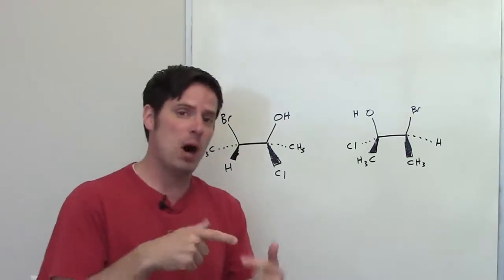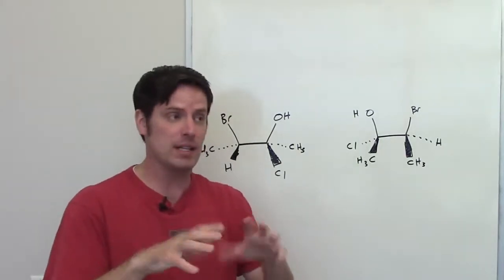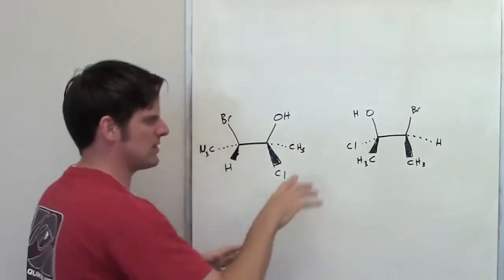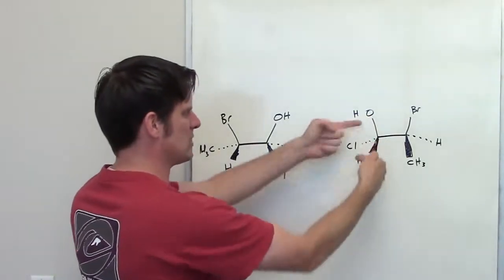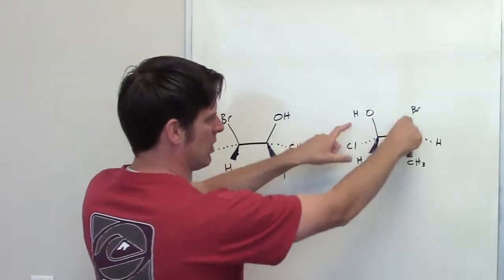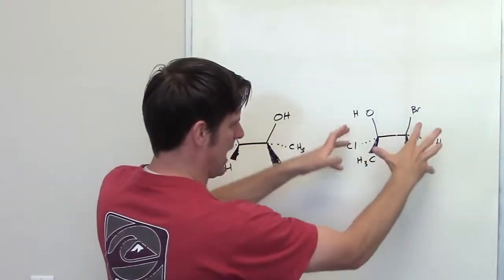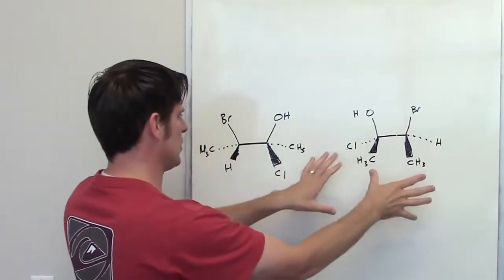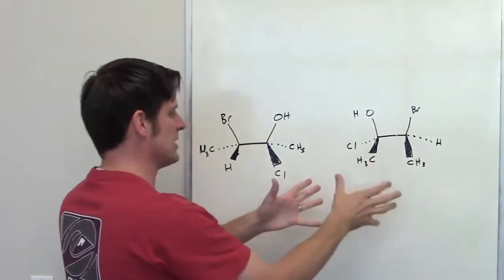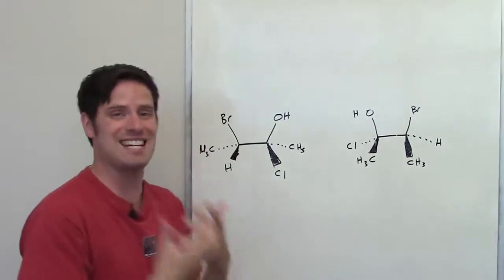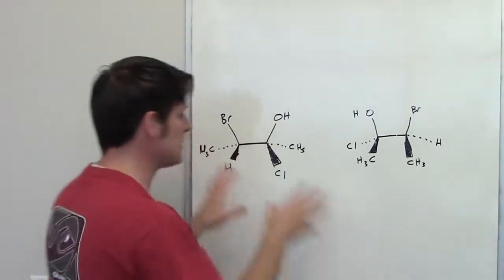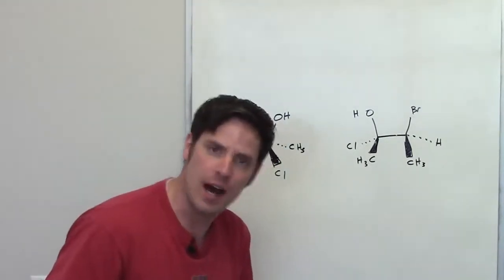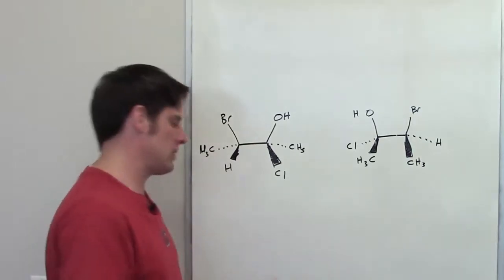You should remember that single bonds have the ability, generally speaking, to rotate freely, which means that if I took this OH and rotated it around, and rotated this bond around in some way, it's possible that this molecule to the right could be rearranged in some fashion to look like the exact mirror image of the molecule to the left — or not. I don't know.